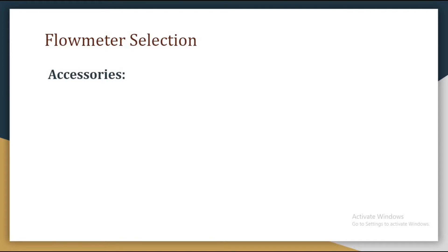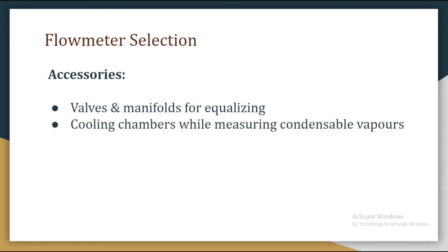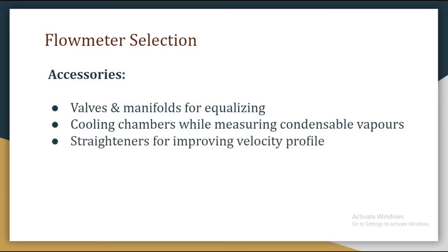The next thing is accessories. We need valves and manifolds for equalizing, and cooling chambers for a flow meter while measuring condensable vapors. We need straighteners for improving the velocity profile — when the flow profile is turbulent and not desirable, we use a straightener to restore a more linear nature. We also need separators, which prevent contaminating fluids like water in oil from entering the flow meter.